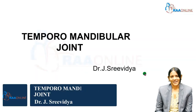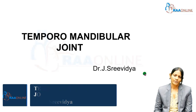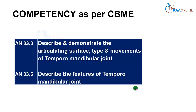Good morning. Welcome to RAW Online. In today's session, we are going to see the temporomandibular joint. The competency under which this session is covered in the CBME curriculum is AN 33.3, which describes and demonstrates the articulating surface, type, and movements of the temporomandibular joint. And under AN 33.5, we are going to describe the features of the temporomandibular joint.